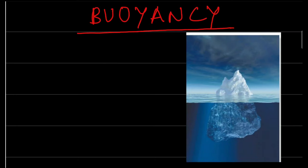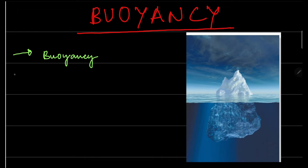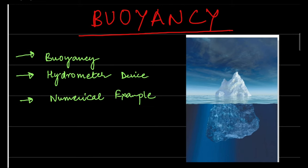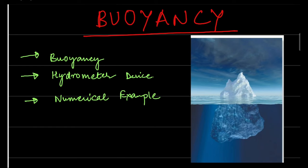In today's lecture we will understand the concept of buoyancy. The lecture will cover: first, the principle of buoyancy and how the buoyant force works and how to calculate its value; second, the hydrometer, a device used for measuring the specific gravity of any liquid, which is based upon the buoyancy principle; and third, a numerical problem to develop our understanding of the buoyancy principle.